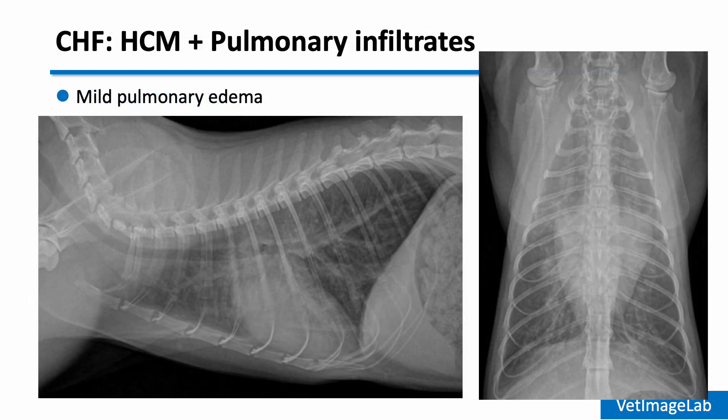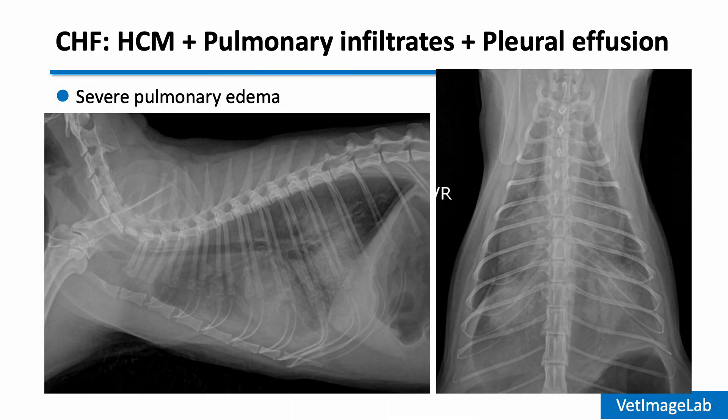When pulmonary infiltrates are observed with cardiomegaly, left atrial enlargement, and distended pulmonary vessels, cardiogenic pulmonary edema can be considered. In this cat with mild pulmonary edema, you can see interstitial infiltrates in the caudal lung fields, which indicate the onset of congestive heart failure. In more advanced cases, diffuse pulmonary infiltrates and increased opacity are seen, especially in the caudal lung fields. Pleural effusion may also be present, making the cardiac silhouette less distinct, indicating severe congestive heart failure.